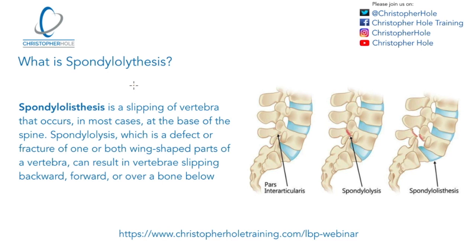Spondylolisthesis is a condition of the spine, and more specifically a condition of the vertebrae that occurs mainly at the base of the spine. We're talking L5-S1 as the most common place, but it can also be seen at L5-L4.